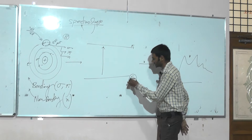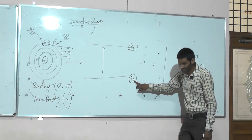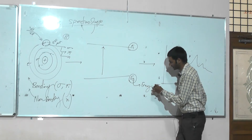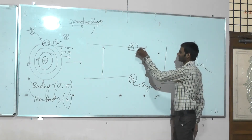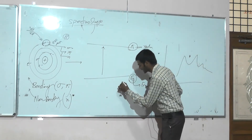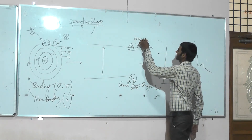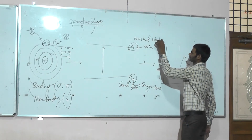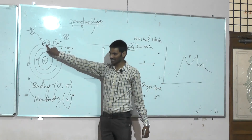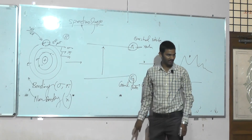It undergoes excitation from one energy state into another energy state. One energy state is E0 and the other is E1. E0 is the ground state, and E1 is the excited state. After absorption by the valency electron based on its character, it undergoes excitation from the ground state E0 into the excited state E1.